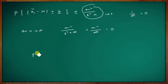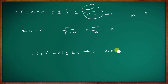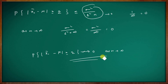Therefore, the probability that |x-bar-n minus mu| is greater than or equal to epsilon tends to 0 as n tends to infinity. This is the Weak Law of Large Numbers.